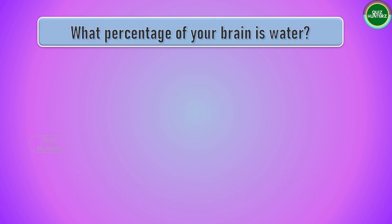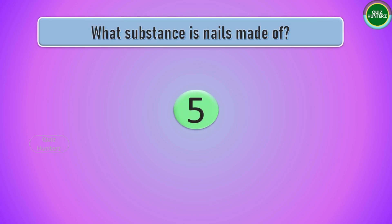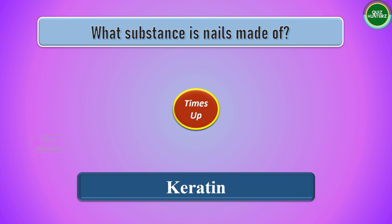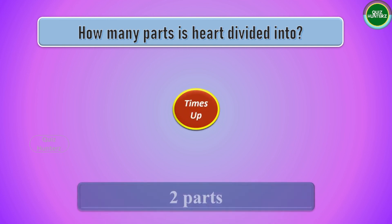Next question: what percentage of your brain is water? The answer is 80%. Next question: what substance are nails made of? The answer is keratin. Next question: how many parts is the heart divided into? The answer is 4 parts.